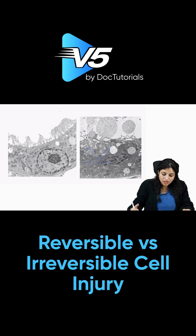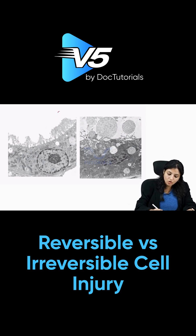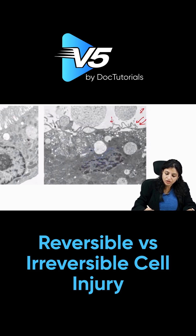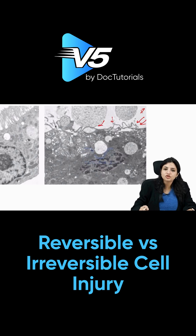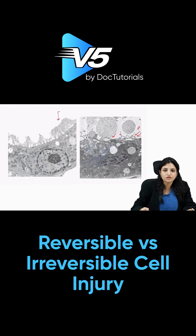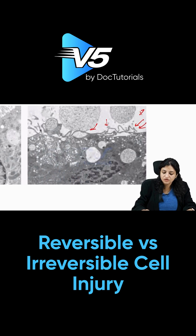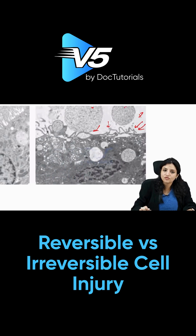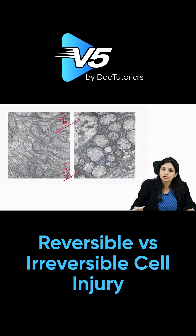This is a normal cell which should show microvilli. In this image, there is loss of microvilli — there is nothing here — but there is formation of blebs. Formation of blebs is a very characteristic feature of reversible injury. So the key features are: no microvilli and bleb formation — this is reversible cell injury.